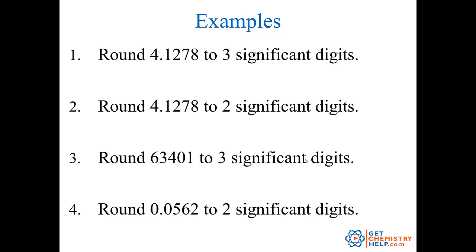How about rounding 4.1278 to three significant digits? I keep the first three significant digits. The first non-significant digit is a seven — that's five or greater, so I round up on the last significant digit. So 4.12 becomes 4.13.